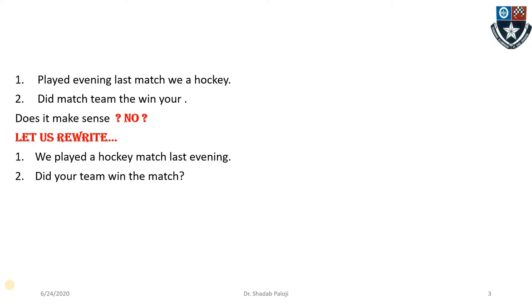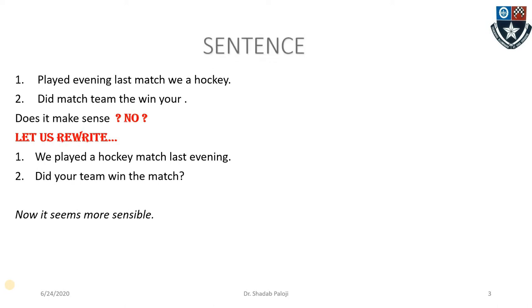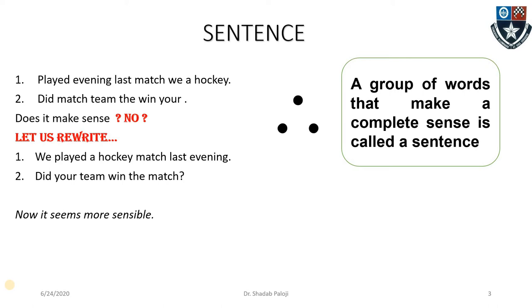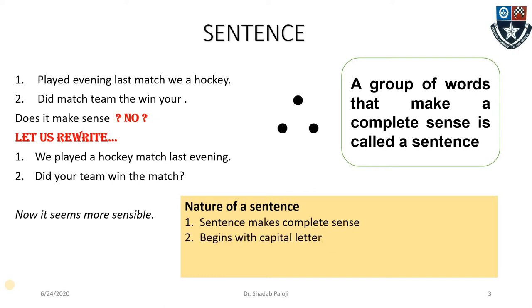They are the same words as we saw in the earlier statements but with a different structure. So this is what we want to understand — what is this structure, what is it that makes a statement sensible to us? Such a concept is known as a sentence. A sentence has a group of words that make complete sense. That is the first and most important feature of a sentence.